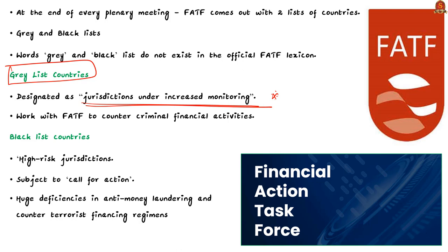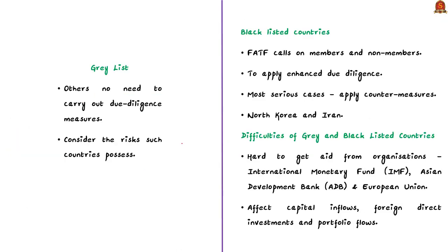Secondly, the blacklist — called 'high-risk jurisdiction subject to call for action.' These blacklisted countries are often termed non-cooperative countries or territories or NCCT. These countries support terror funding and money laundering activities. FATF reviews the blacklist regularly, adding or deleting entities. Currently, North Korea, Iran, and Myanmar are in the blacklist.